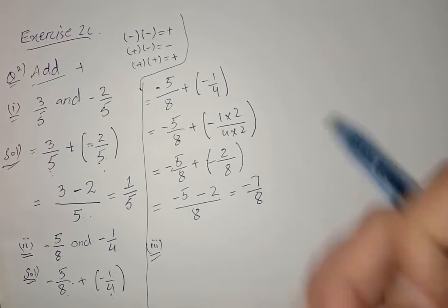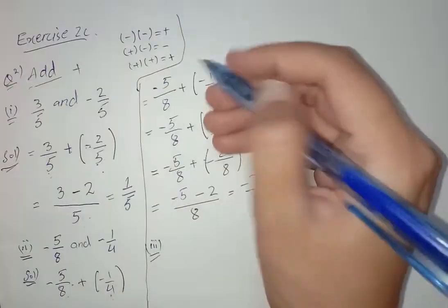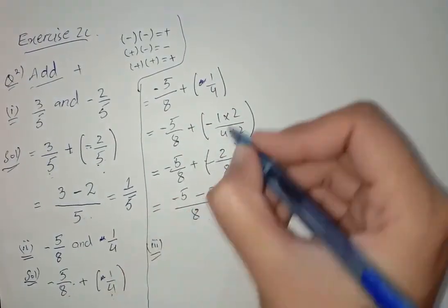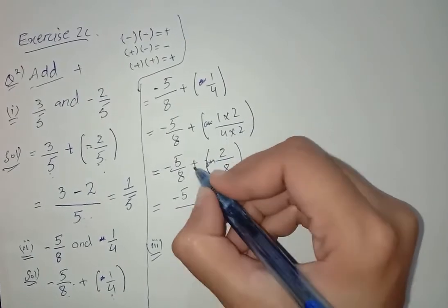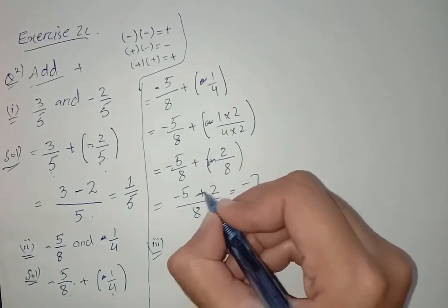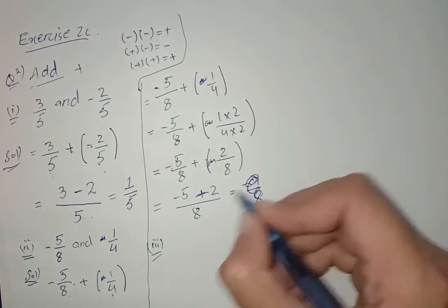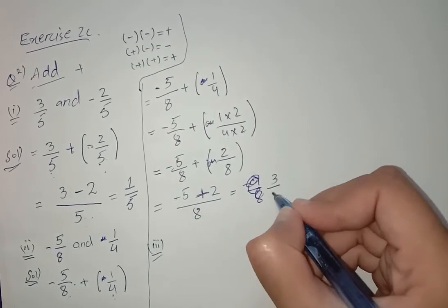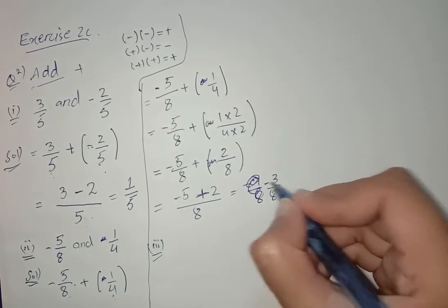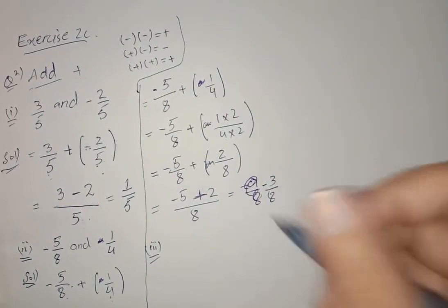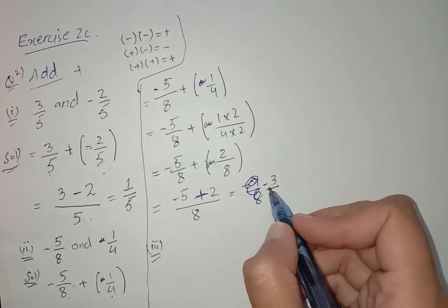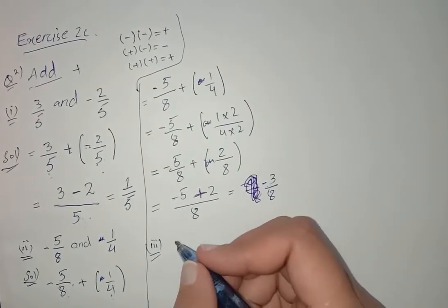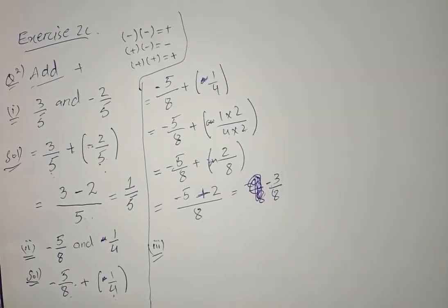Students, I have made a mistake here — there is no minus sign on the first term, so it is a positive value. Plus minus is minus, so the answer becomes minus 3 by 8. The minus sign comes because the sign of the bigger value always comes with the answer.